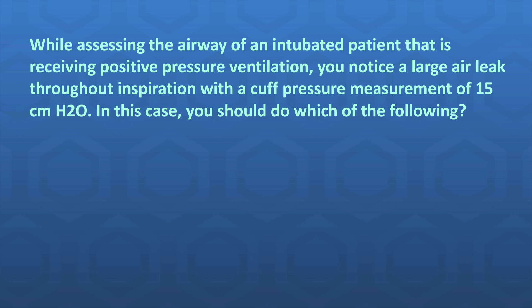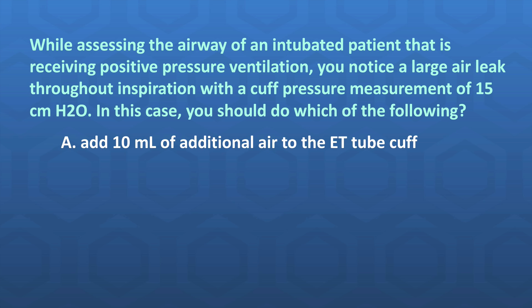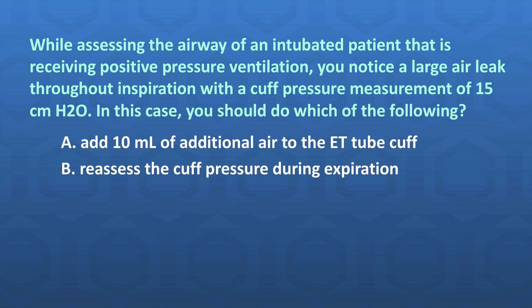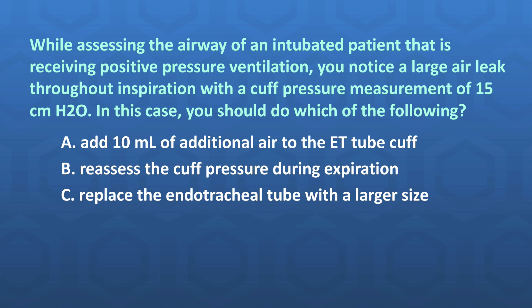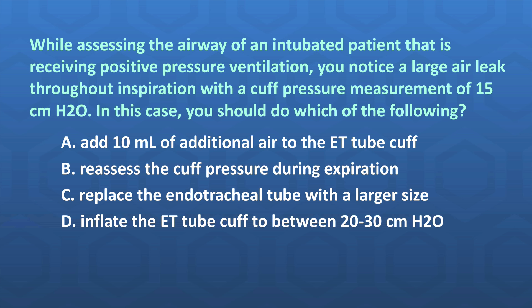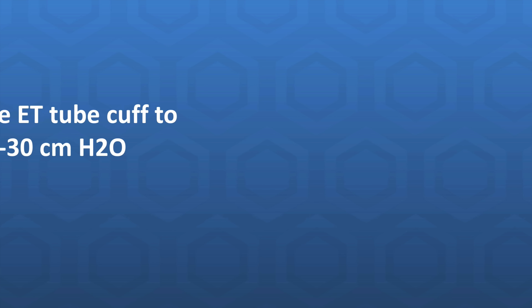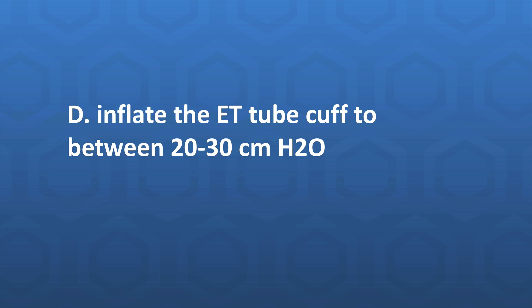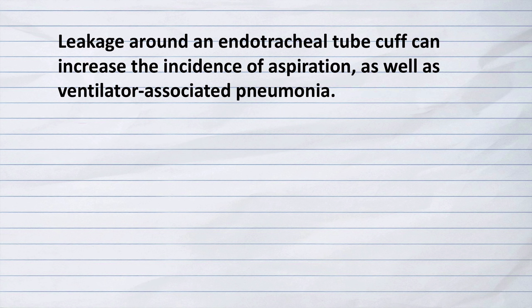While assessing an intubated patient receiving positive pressure ventilation, you notice a large air leak throughout inspiration with a cuff pressure of 15 cmH2O. You should do which of the following? A) Add 10 mL of air to the ET tube cuff, B) Reassess the cuff pressure during expiration, C) Replace the endotracheal tube with a larger size, or D) Inflate the ET tube cuff to between 20 to 30 cmH2O. The correct answer is D — inflate the ET tube cuff to between 20 to 30 cmH2O.